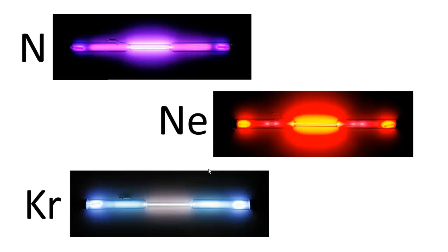These images show light emitted by nitrogen, neon, and krypton atoms. Notice that each element gives off its own characteristic color of light.